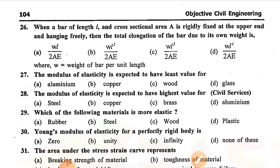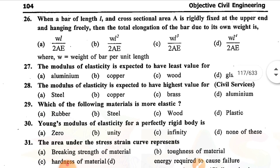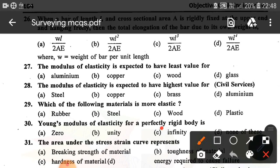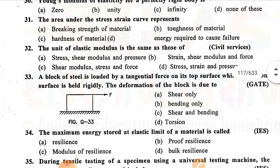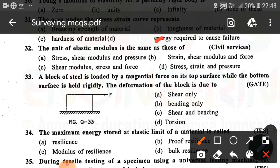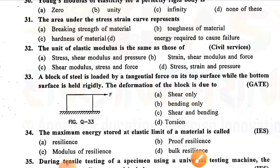Question number thirty: Young's modulus of elasticity for a perfectly rigid body is — option C is correct — infinity. Question number thirty-one: The area under the stress-strain curve represents — option D is correct — energy required to cause failure. Question number thirty-two: The unit of elastic modulus is the same as those of — option A — stress, shear modulus, and pressure.